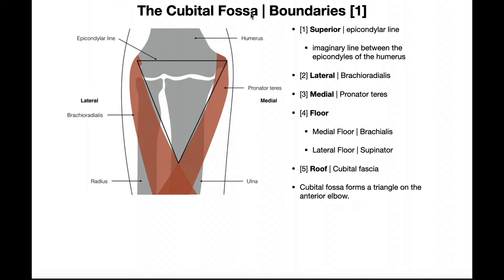What is the cubital fossa and where is it? If we look at our arm at the elbow joint on the anterior surface — the side opposite the olecranon, the non-bony part — if you put your fingers right there at the crease on your elbow, that's really where the cubital fossa is. There's actually an indentation that allows for the passage of a bunch of important structures from the proximal arm down into the distal arm.